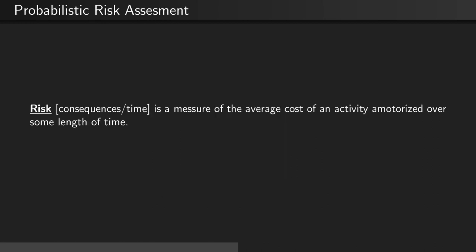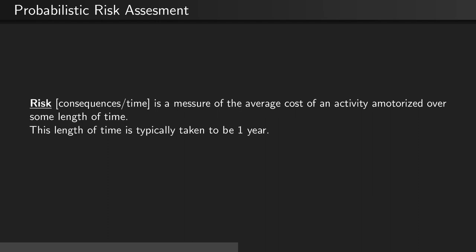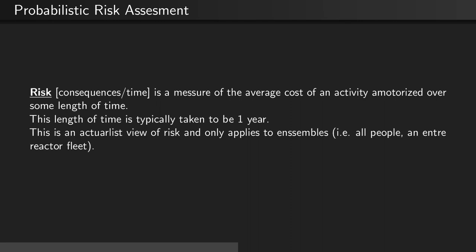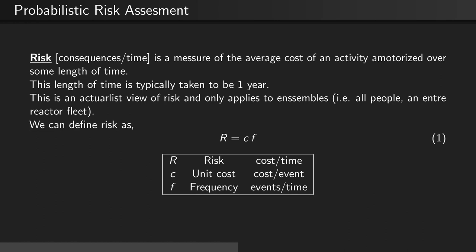Risk, as measured in consequences per time, is a measure of the average cost of an activity amortized over some length of time. This length of time is typically taken to be one year. This is an actuarialist view of risk and only applies to ensembles, i.e. all people or an entire reactor fleet. We can therefore define risk as R equals CF, where R is the risk, C is the unit cost, and F is the frequency of an event.